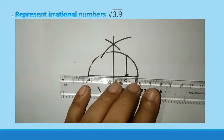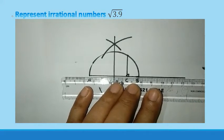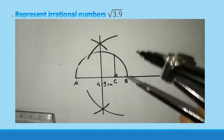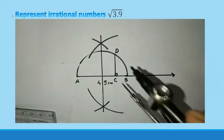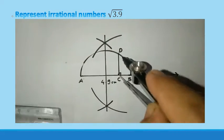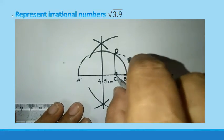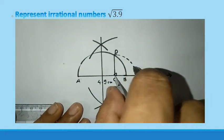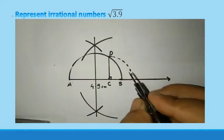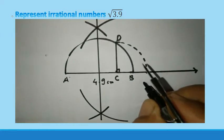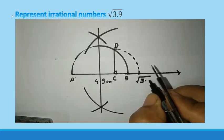And also you have to extend the line AB now. Now take this distance. Give name as CD. And with CD as a radius draw the arc which cut the line AB into some point. And that point represents root 3.9.